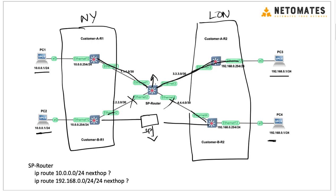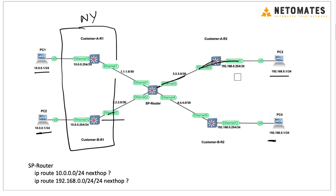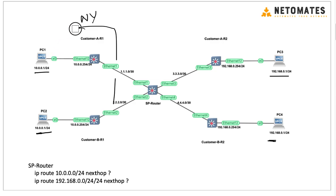However, a service provider typically connects more than two customers — often hundreds of customers. They cannot add multiple routers for each customer; that is not a cost-effective solution. For that we can leverage a concept called VRF. Similar to VLANs on switches, which divide a single physical switch into multiple logical switches, with VRF we can create multiple routing tables on the same device. We assign interfaces to a specific VRF and they become part of that VRF.